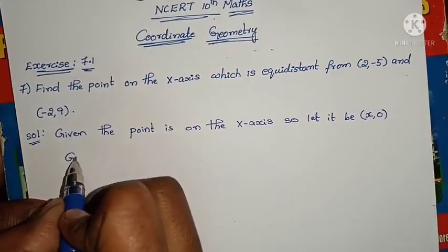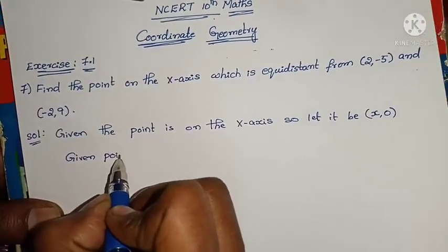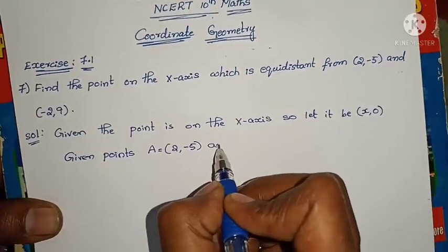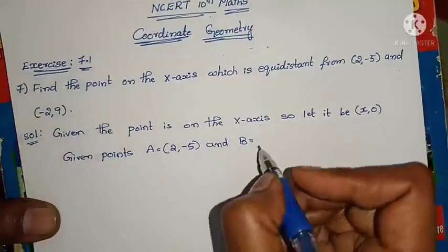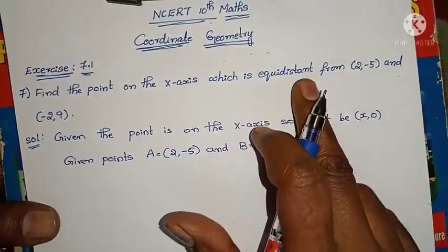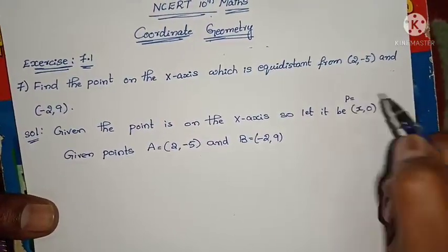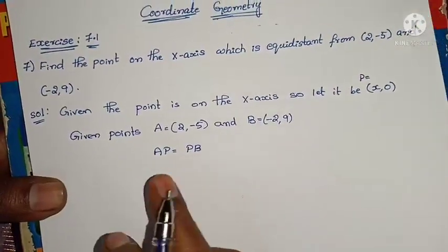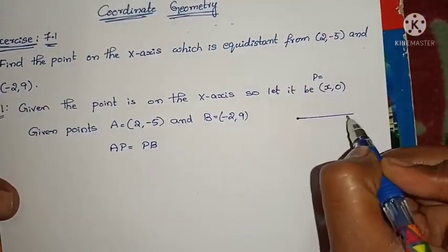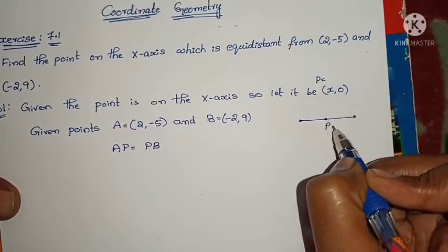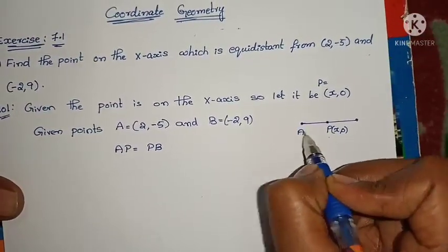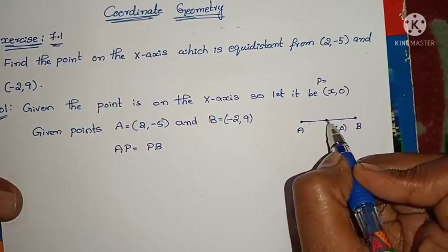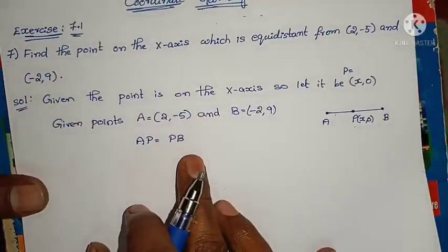Given points: A equals (2, -5) and B equals (-2, 9). What they said is equidistant — let us take this point as P. What they said is AP equals PB, meaning P is the middle point equidistant from A and B. So we take the condition AP equals PB.